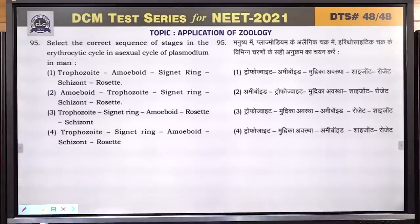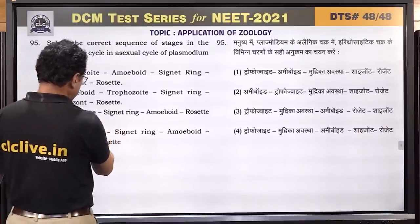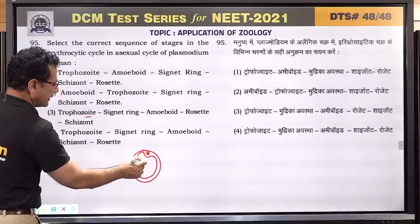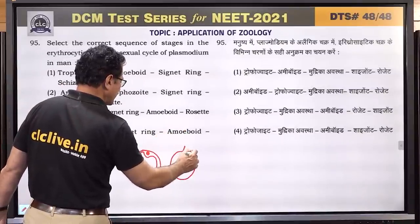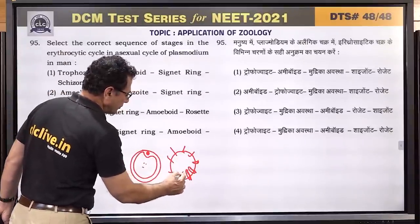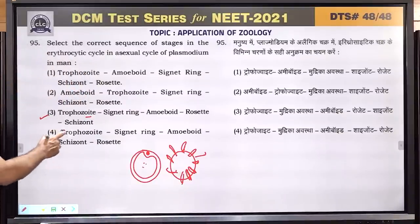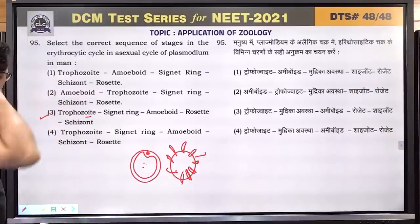Question number 95: select the correct sequence of stages in the erythrocytic cycle in asexual cycle of Plasmodium in man. The sequence is: trophozoite, then signet ring stage, then amoeboid stage, then rosette stage, then schizont — which releases merozoites that infect other RBCs. Answer is 3.